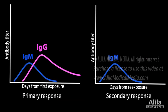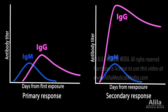Upon re-exposure to the same pathogen, memory B cells mount a much faster immune response. Plasma cells form within hours, producing huge amounts of the best possible antibody within days, destroying the pathogen so quickly that no signs of illness are noticeable.